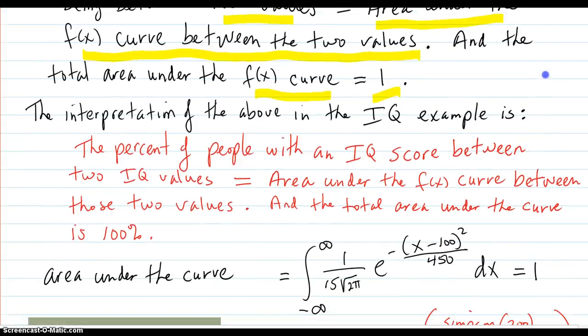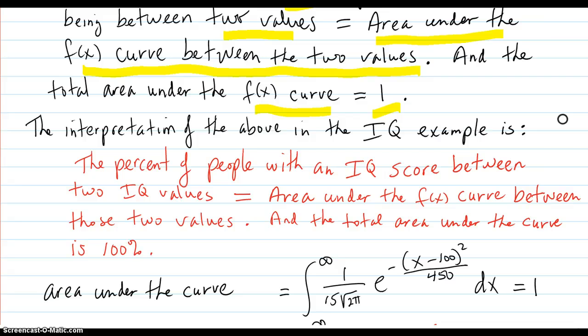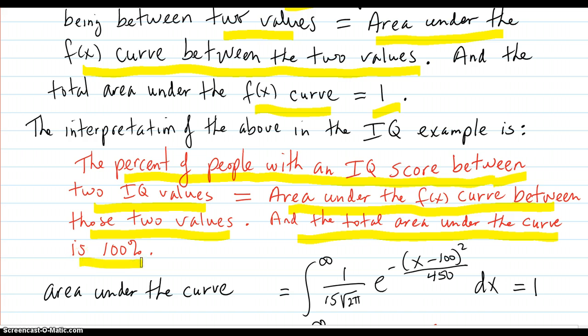The interpretation of that last paragraph in terms of the IQ example is the percent of people with an IQ score between two IQ values is the area under the f(x) curve between the two values. And the total area under that f(x) curve is 100%.